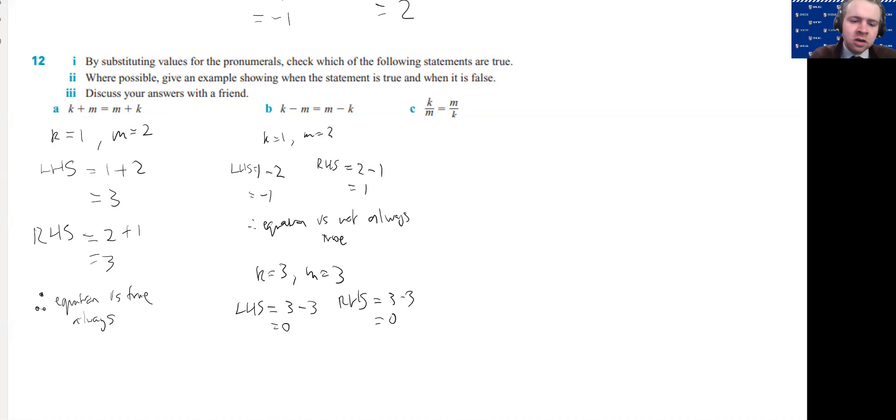So we can say the equation is true when m and k have the same value. Now, another way we can say that. So therefore, equation is true when k equals m. That is, they have the same value. They equal each other.